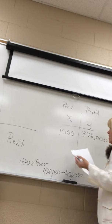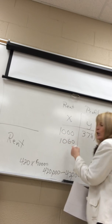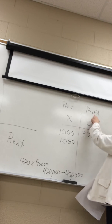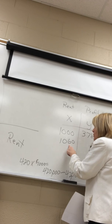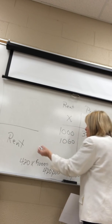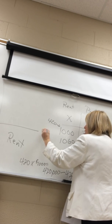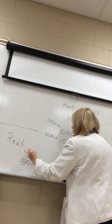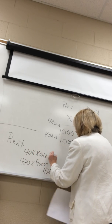If you increase the rent by $60, what's the profit going to be? Each unit will be paying $1060, but there are 12 fewer units than before. There were 420 units, so now there are 408 units paying $1060. So the revenue is 408 times $1060.